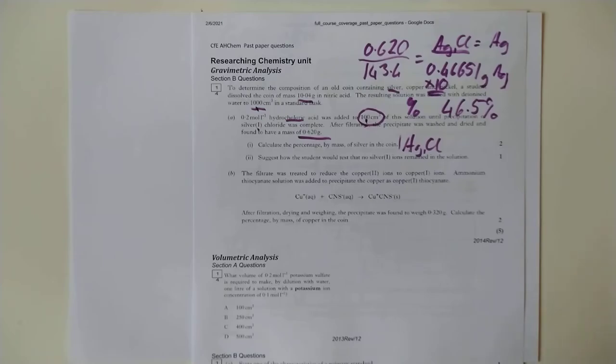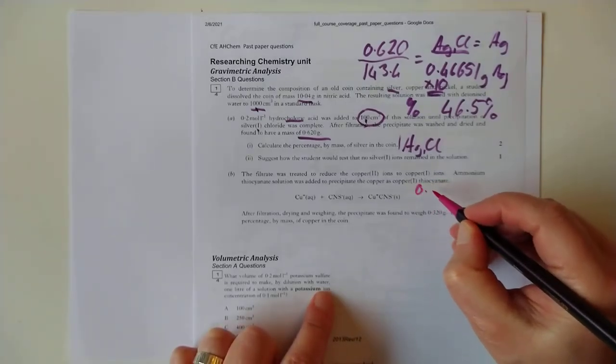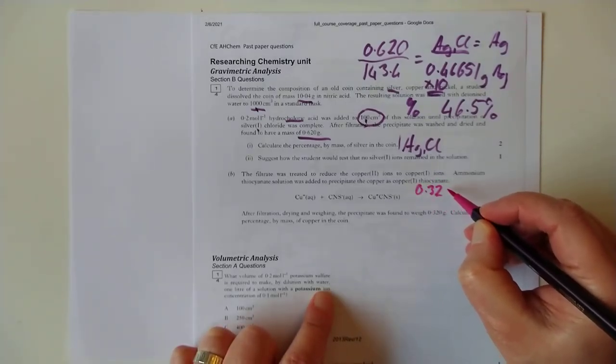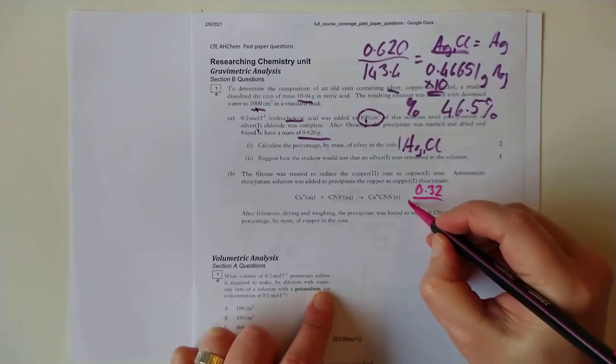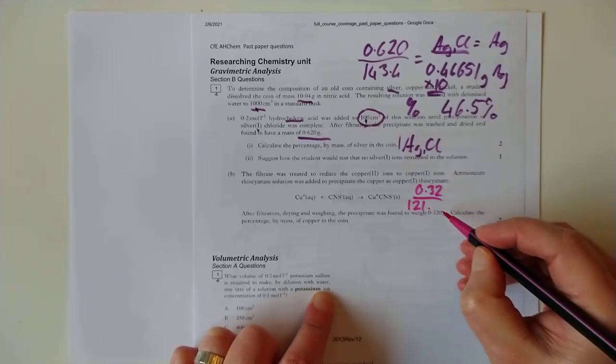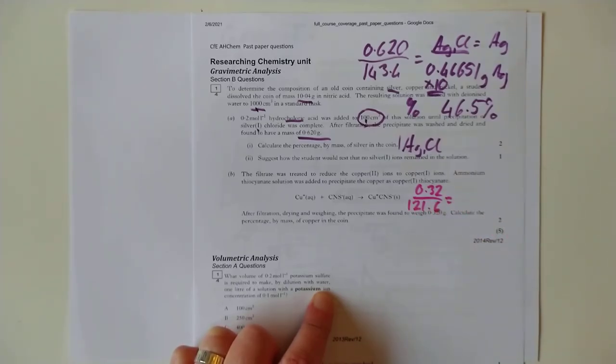In this case, we have got 0.32 over, let me go and calculate the GFM of copper-thiocyanate. It's 121.6 which gives us